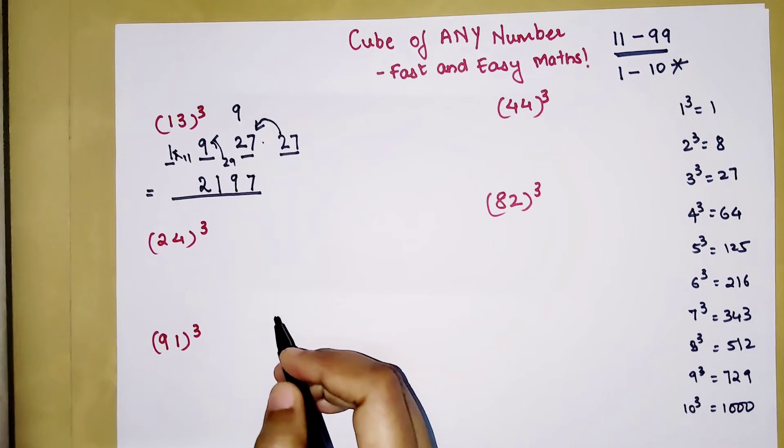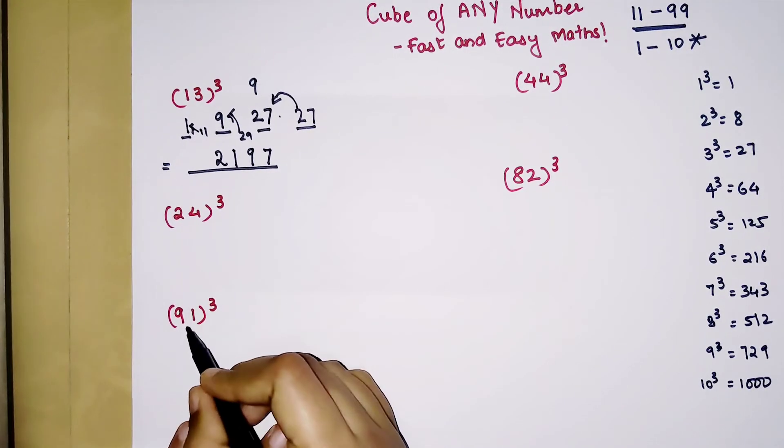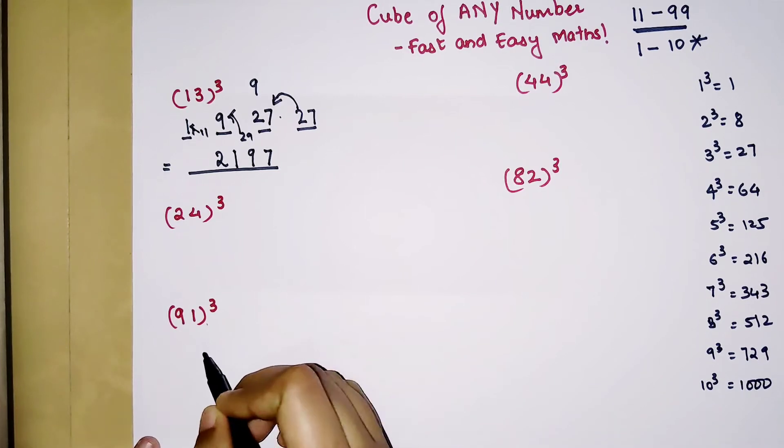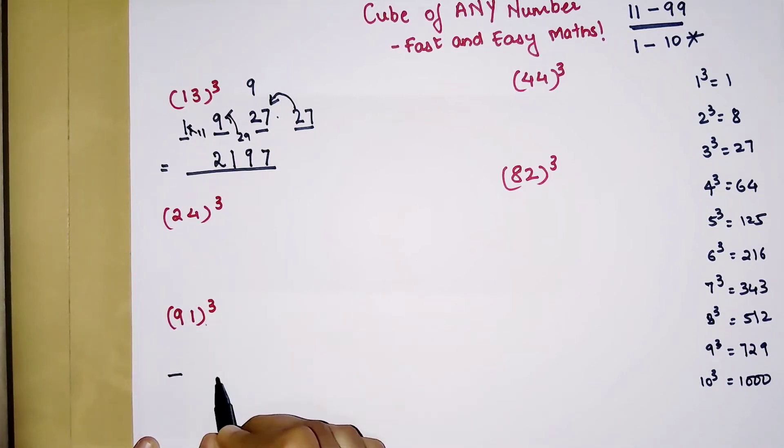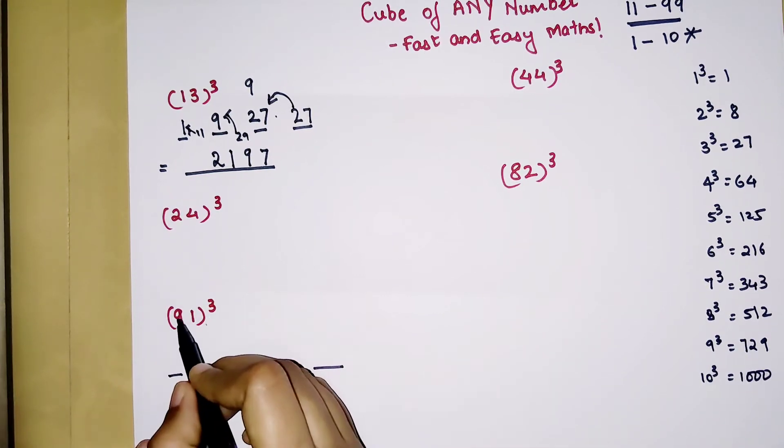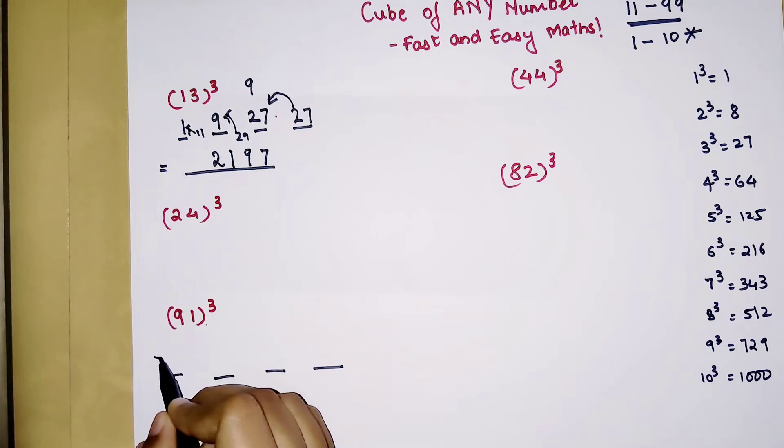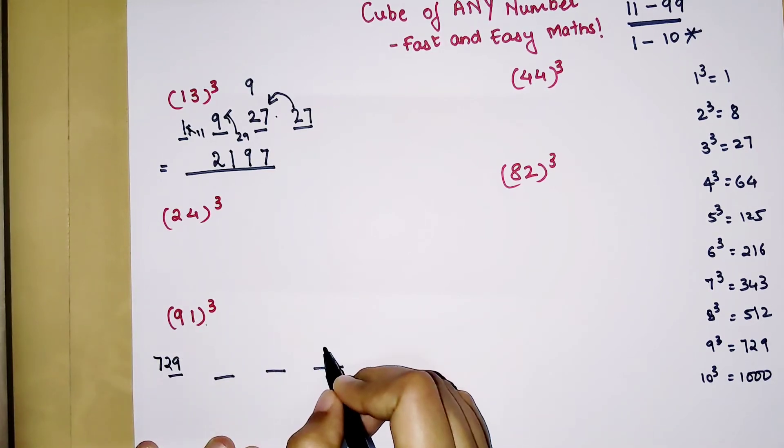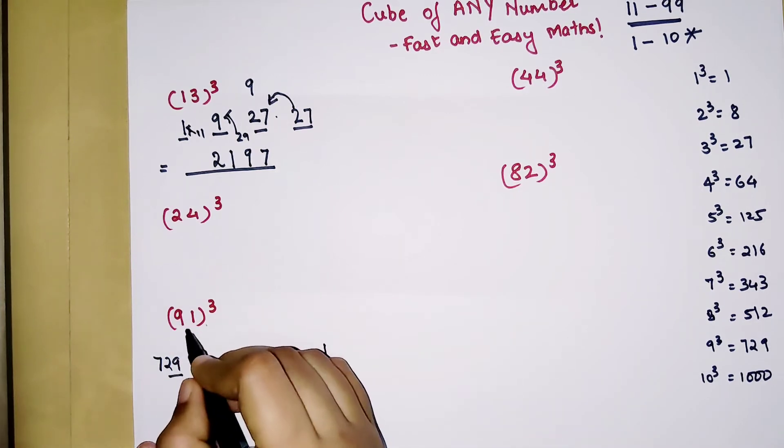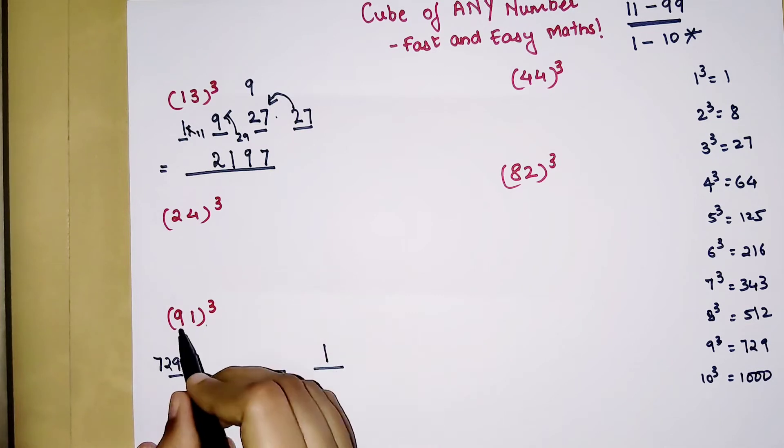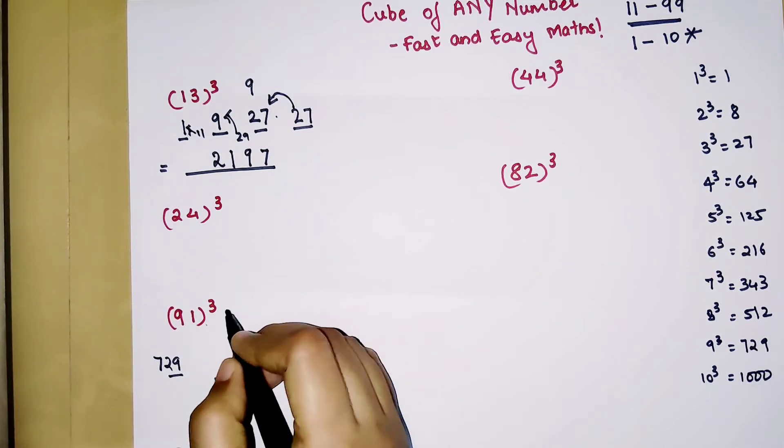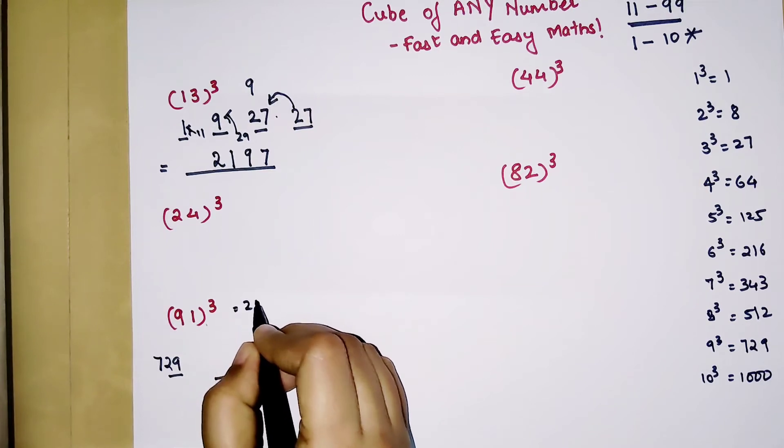Let's do a bigger number now. So we have 91 cube. Again what we will do is first we will put 4 dashes so that we don't forget that there are 4 parts to our answer. So first one will be 9 cube which is 729. And the last one will be 1 cube which is 1. Then next what you do is 9 into 1 into 3 is going to get you 27.